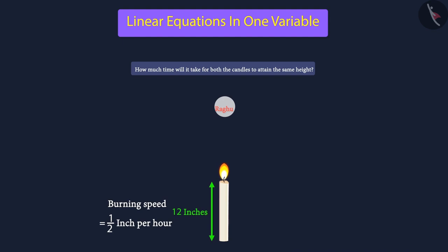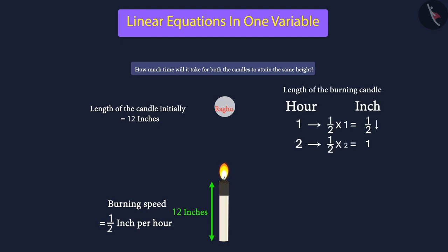We have been told that Raghu's candle is 12 inches long. The candle is burning at a speed of half inch per hour, which means that in one hour it will burn half inch, in two hours it will burn one inch, and in three hours it will burn one and a half inch. Therefore, we can say that in each hour the candle will burn one by two times.